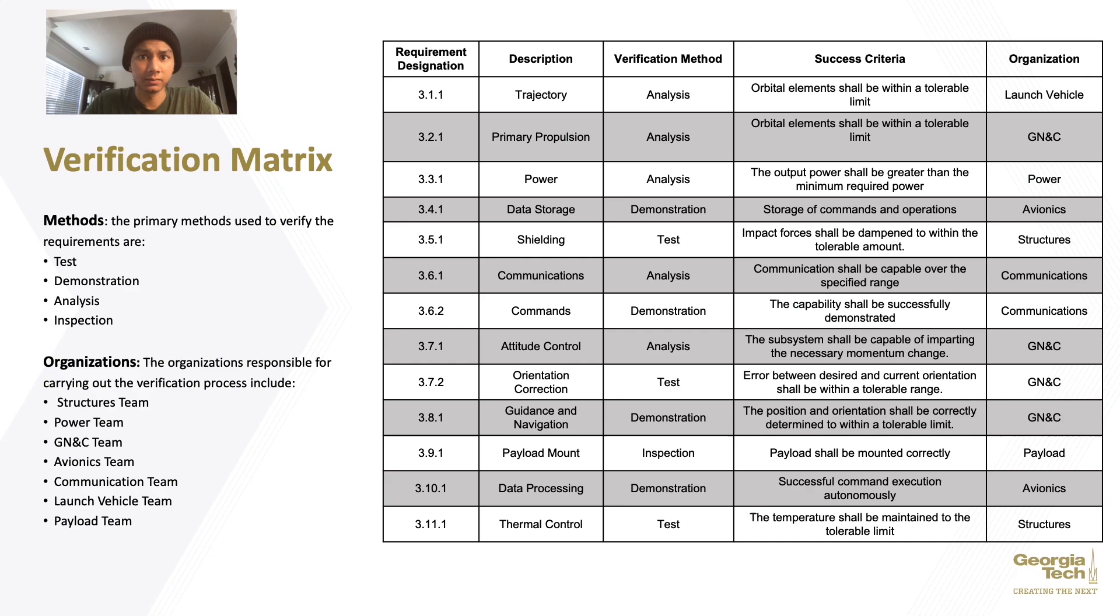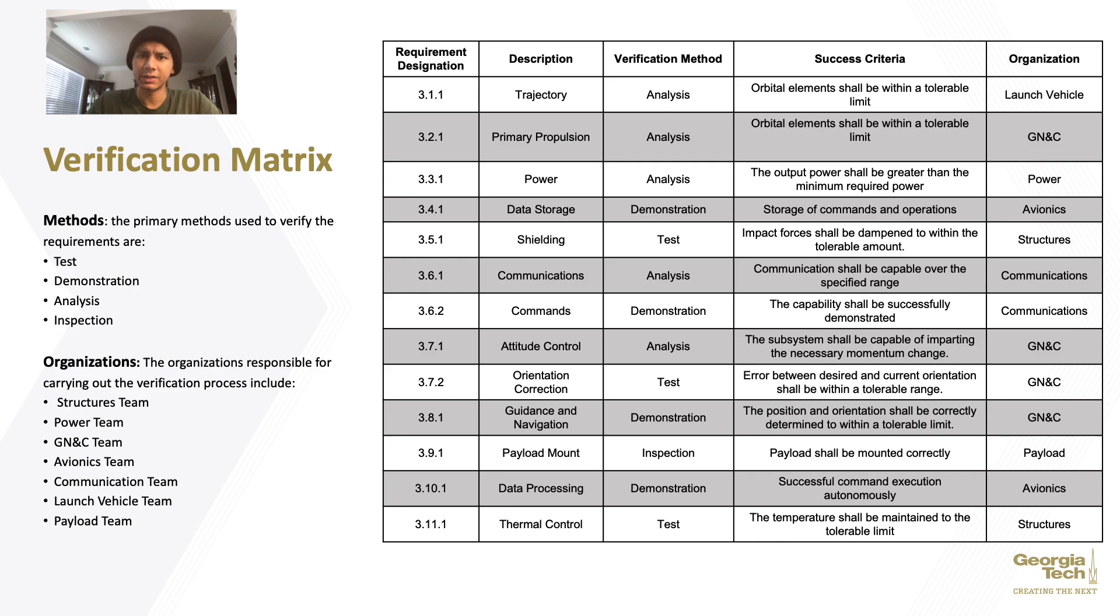So, when talking about mission success, it's also important to talk about the verification plans that we plan to use to ensure that all of our subsystem-level requirements have been verified. Here's a verification matrix that accounts for each of the subsystem-level requirements presented earlier. It also provides the appropriate verification method and success criteria needed to consider the requirement verified. The responsible organization in charge of carrying out the verification process for each requirement is also listed here. And in doing so, we can also make sure that all of our top-level requirements have been met.